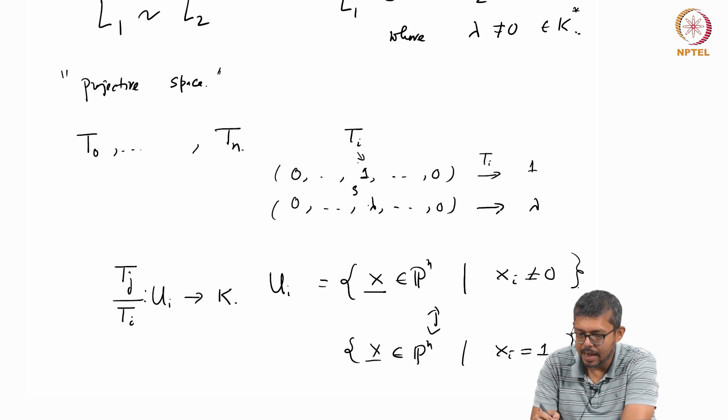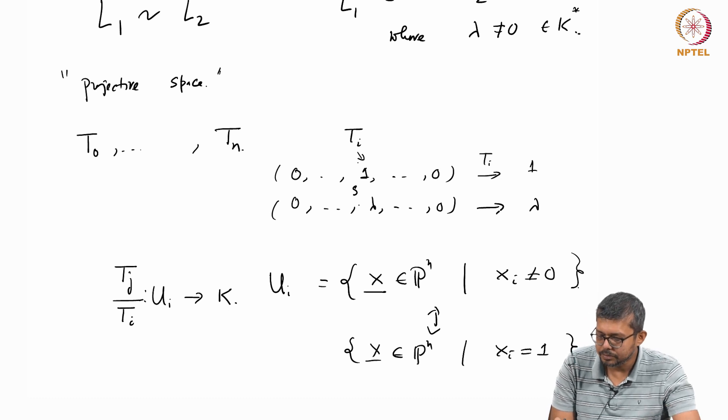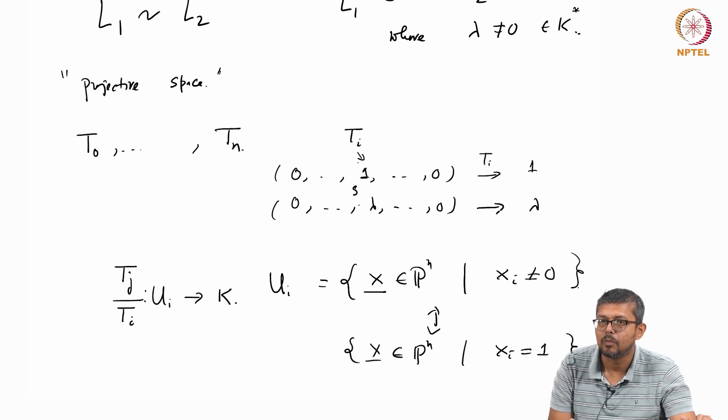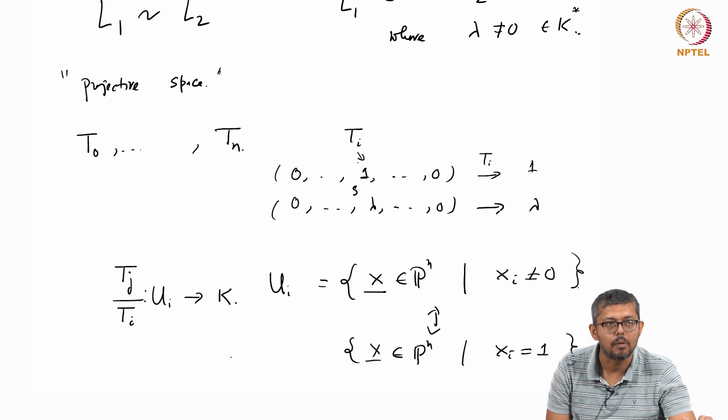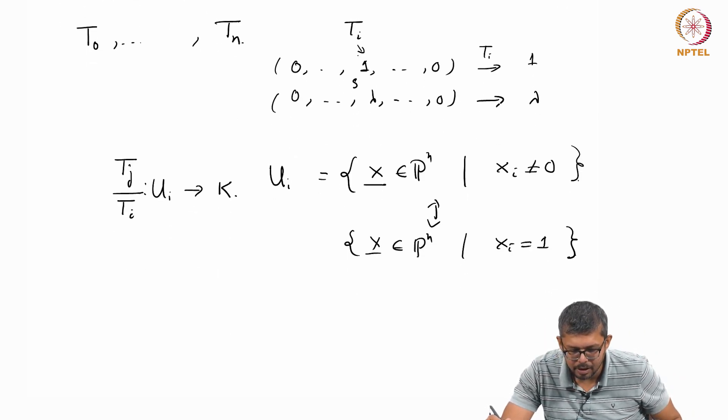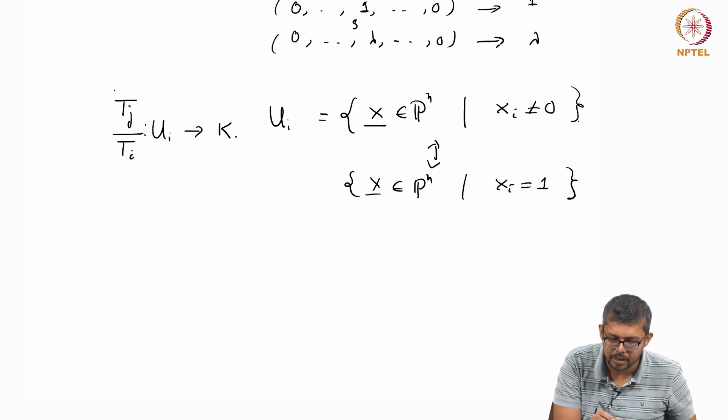Because if you take lambda(0,0,1,...) and this, then when you do this, this is a function t_j/t_i. When you do this, so this can... now we will see that these kind of functions will allow.